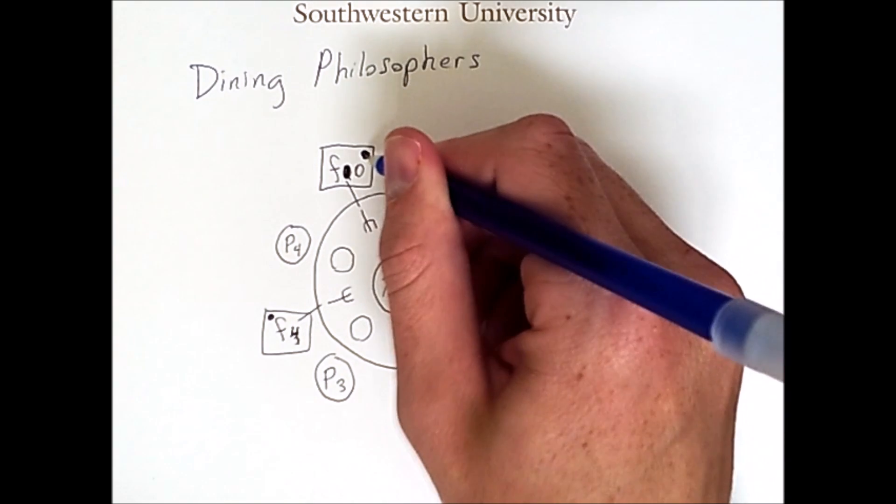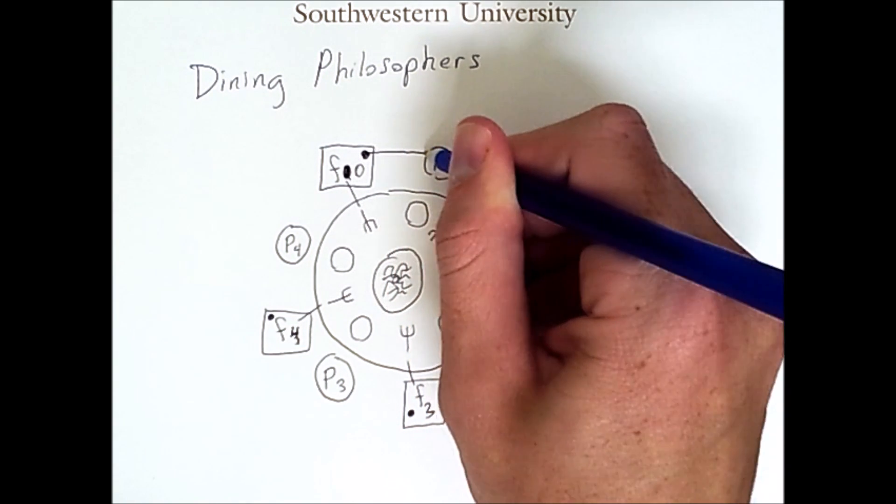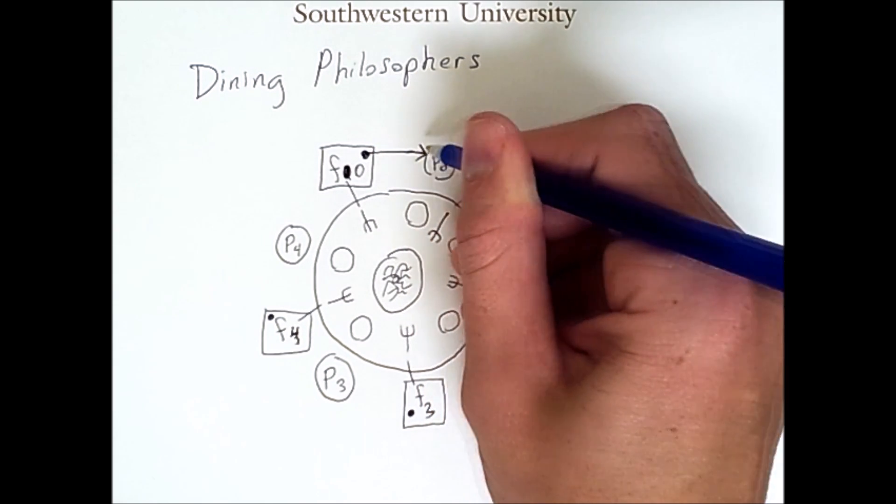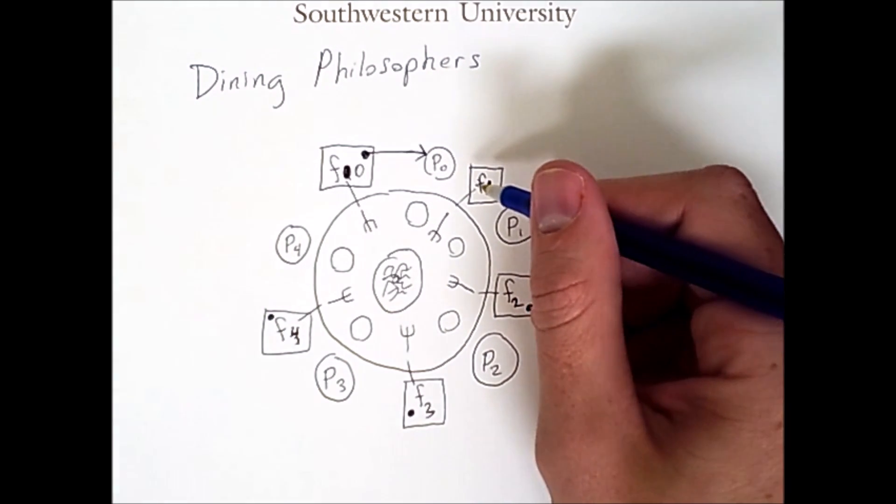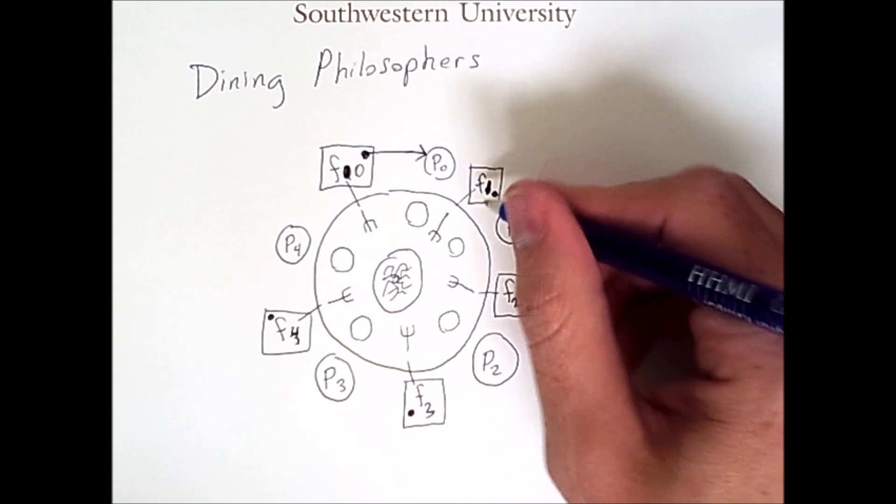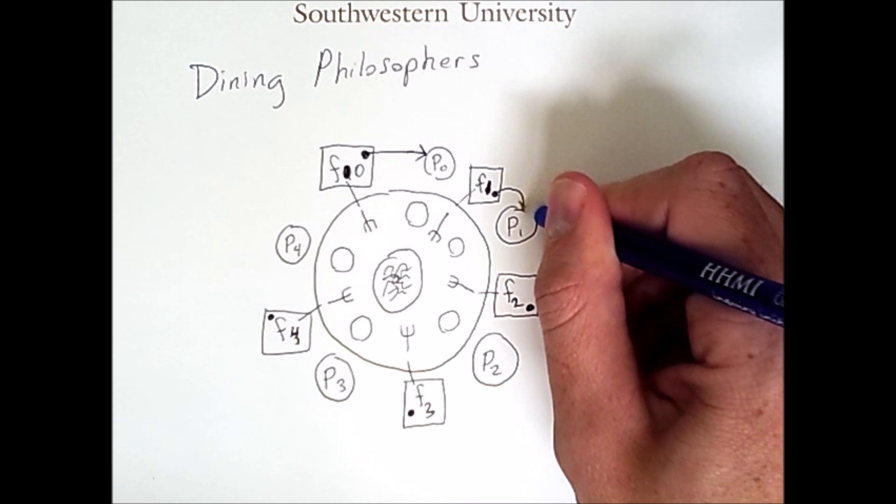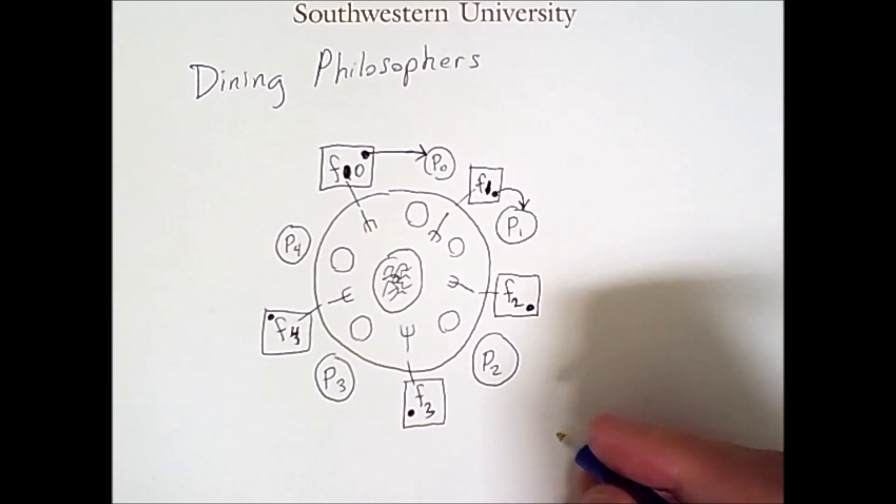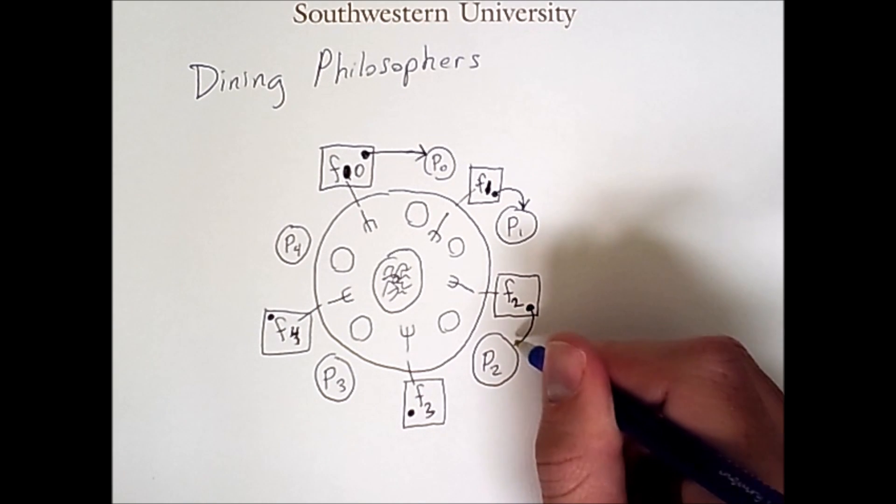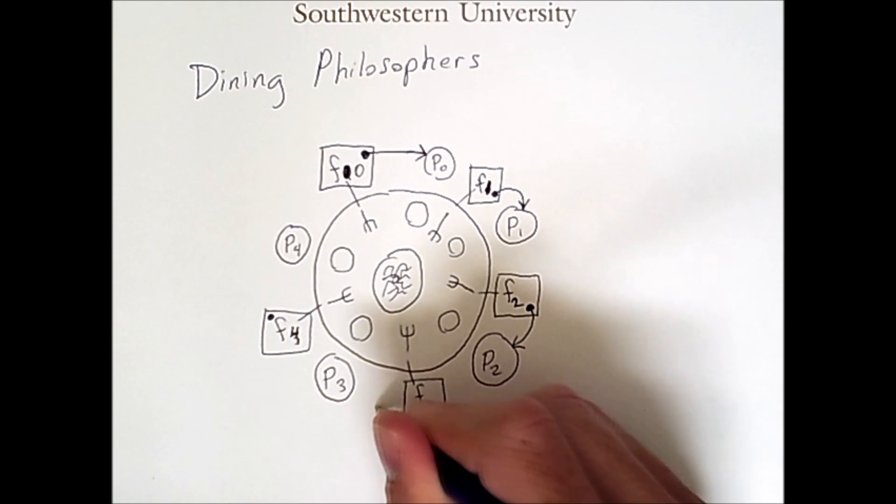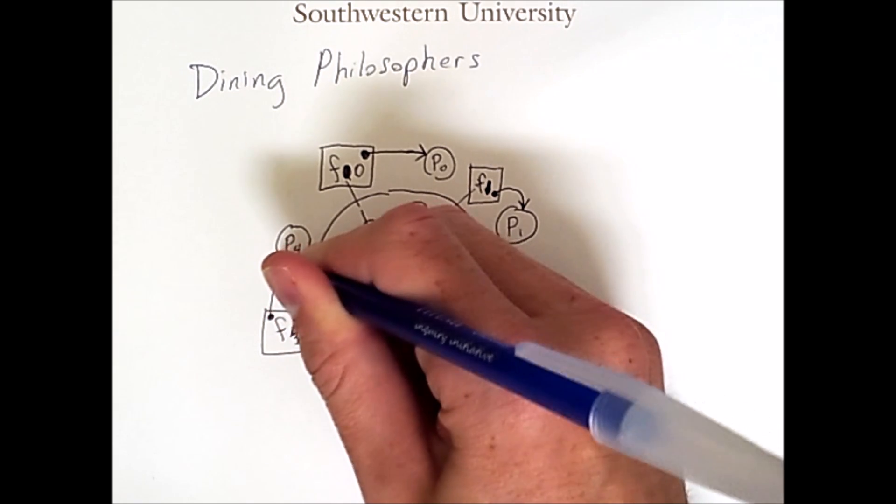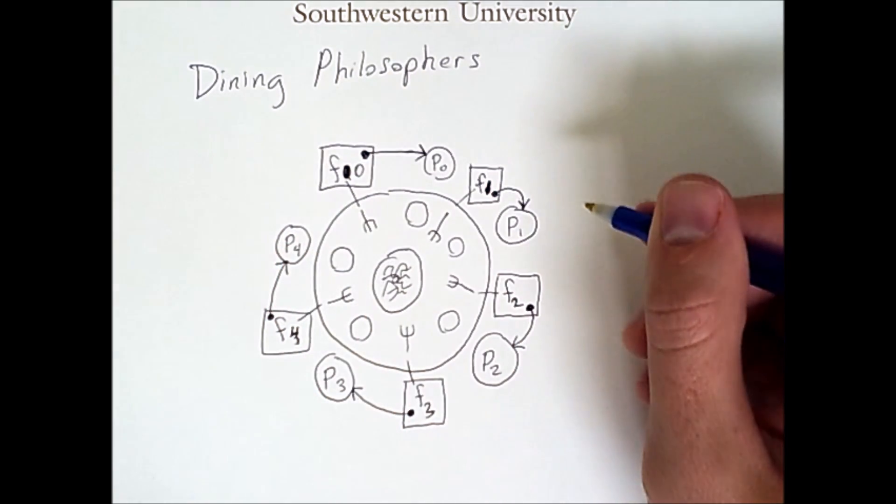Philosopher 0 grabs and successfully claims fork 0. The next thing that this philosopher would attempt to do is grab fork 1. Let's say that before that happens, philosopher 1 grabs that fork and thus claims that resource. At the same time, or close enough, fork 2 is claimed by philosopher 2, fork 3 is claimed by philosopher 3, and fork 4 is claimed by philosopher 4. Every philosopher has picked up one fork.